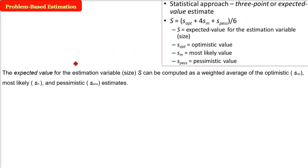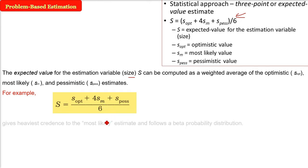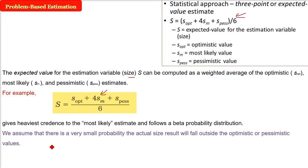The expected value for this estimation variable, the size, is computed as a weighted average using the formula you see here. As I explained, the middle one will be multiplied by 4, others like that, add them and divide by 6 because we are giving heaviest credit to the most likely estimates.